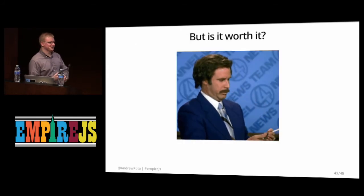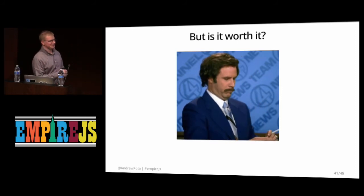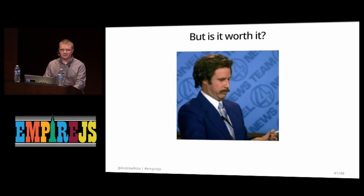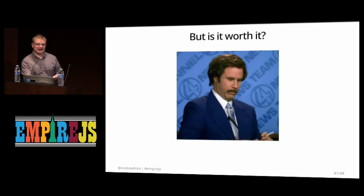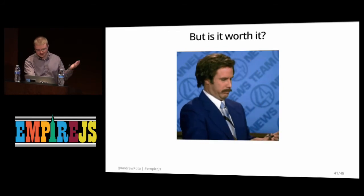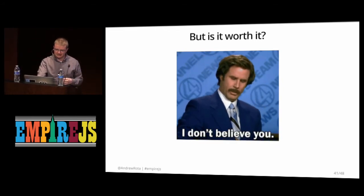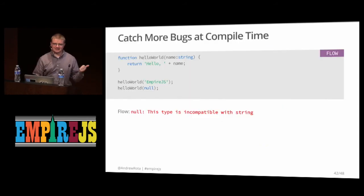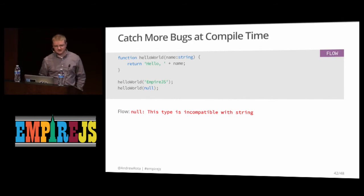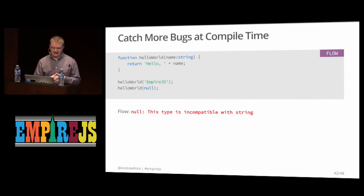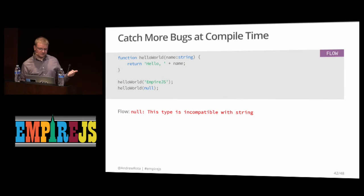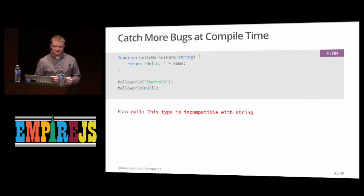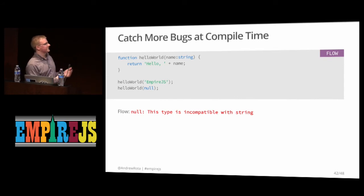So you know how to do it, but is it worth it? It seems like a lot of work. I think there are a few reasons it is worth it. First, you catch more bugs at compile time, which means fewer bugs at runtime and in production. We can shorten the feedback cycle for detecting bugs — the developer can address them right away. For example, Flow's null checking tells you that if you don't pass a string to your function, it won't work. Otherwise you might not know until an integration test fails or a customer complains.